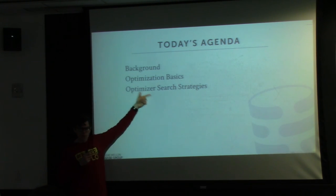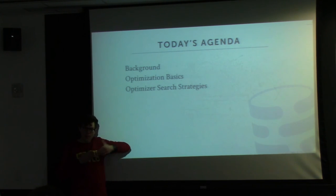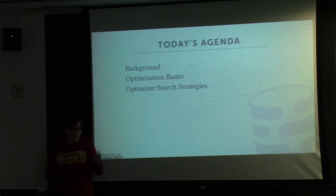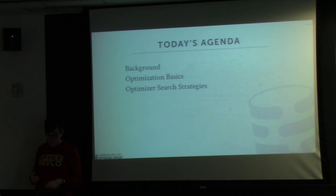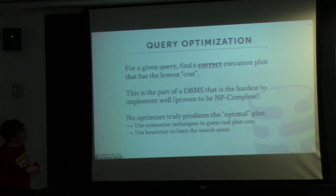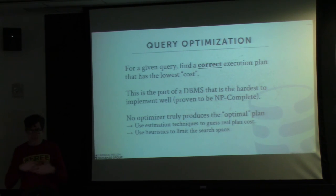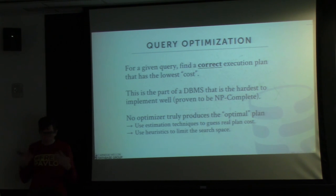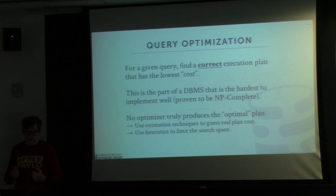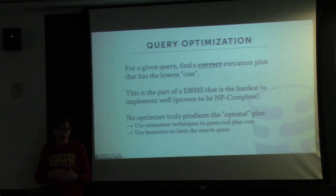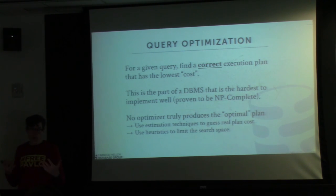We're going to go through all these different search strategies because it's important to see all the different approaches people have tried, and that helps motivate why you want to use Cascades. In a database system, query optimization is basically trying to solve the problem of — given some query from the application, whether in SQL or any language — finding a correct execution plan that has the overall lowest cost among other query plans for that same query.